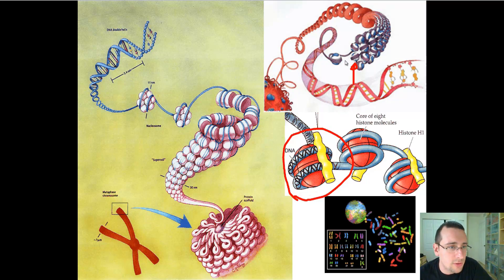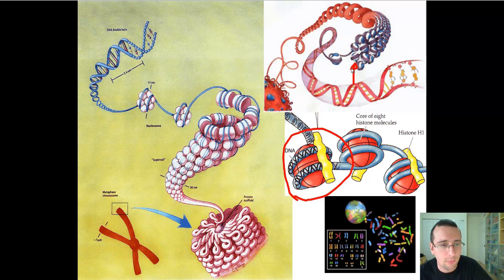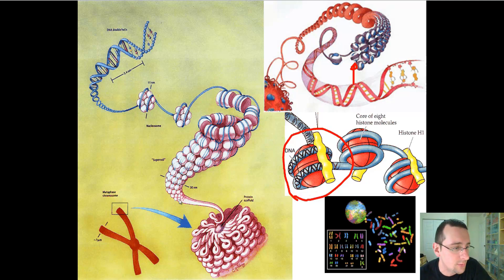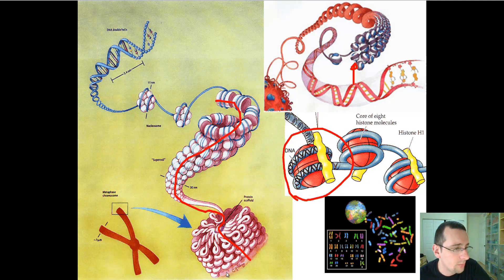These nucleosomes will start gathering on top of each other, as you see up there, forming a coil — a scaffold where many, many DNA strands are all coiled around the same histones, and then histones attached to other histones.